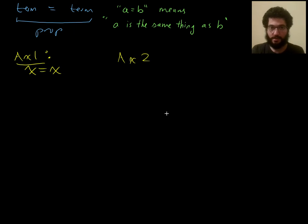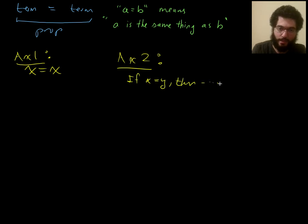So let me not write down all of axiom two, but basically axiom two said, if you know that x equals y, then blah, blah, blah. If you have an equality, then here's how you can use it. You can make a replacement in a proposition and get an equivalent proposition.